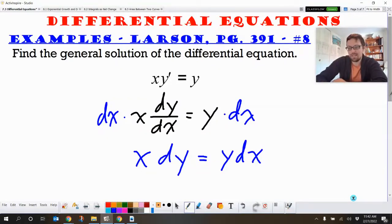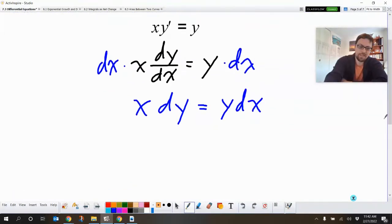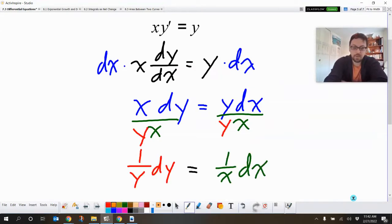I don't want any sort of operations being happened to my dy's and my dx's. So we're going to divide by x. So this also gets divided by x. And then we also want to bring that y over to the dy. So we're going to divide both sides by y as well. Okay. So now that we've done that, we've got proper separation. We can integrate both sides.